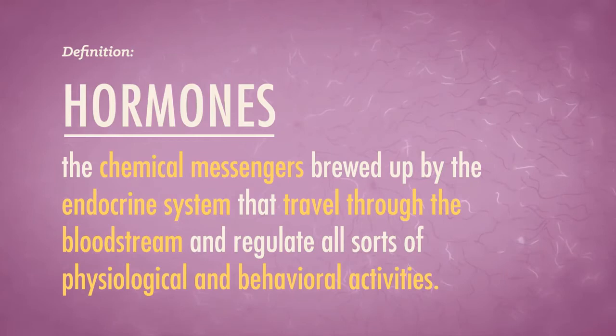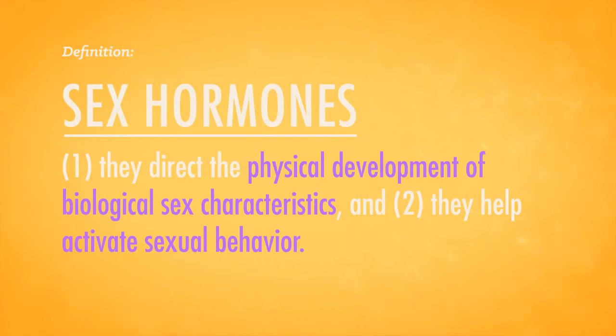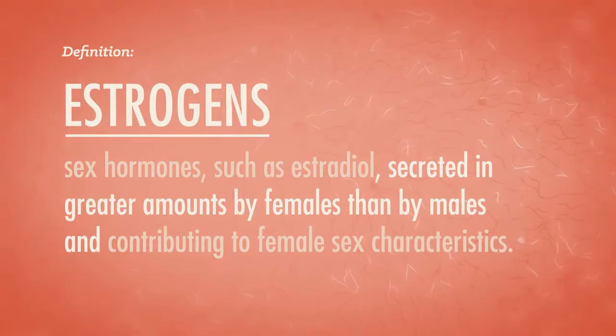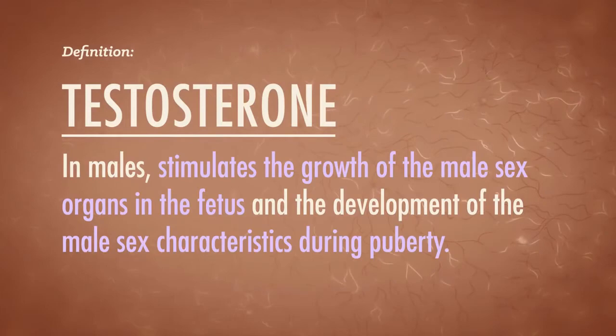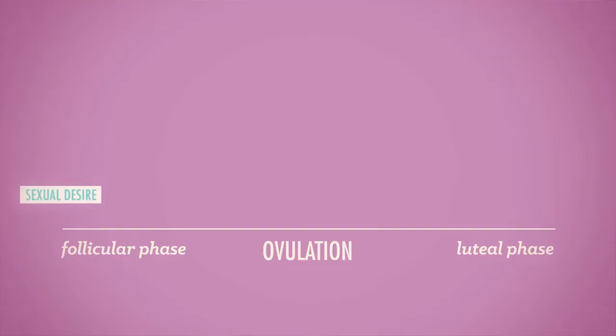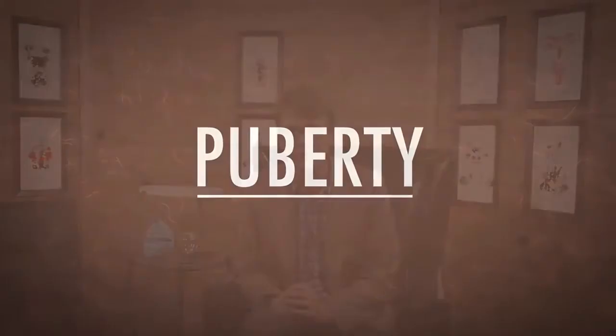Our sex hormones serve two major purposes: one, they direct the physical development of biological sex characteristics; and two, they help activate sexual behavior. Estrogens, like estradiol, contribute to female sex characteristics and are secreted in greater amounts by females than males. While all humans make testosterone, it's the predominant sex hormone for males, stimulating the growth and development of male sex characteristics. Most female mammals become sexually receptive when estrogens peak during ovulation, but it doesn't work that way for humans. Studies have found that female sexual desire spikes slightly around ovulation when women are most fertile, and males can also respond with higher testosterone levels when ovulating women are around. But these short-term changes hardly compare to the larger hormonal shifts throughout a lifetime — puberty gets everyone more interested in dating, and later in life, as sex hormone production decreases, amorous urges tend to decrease as well.